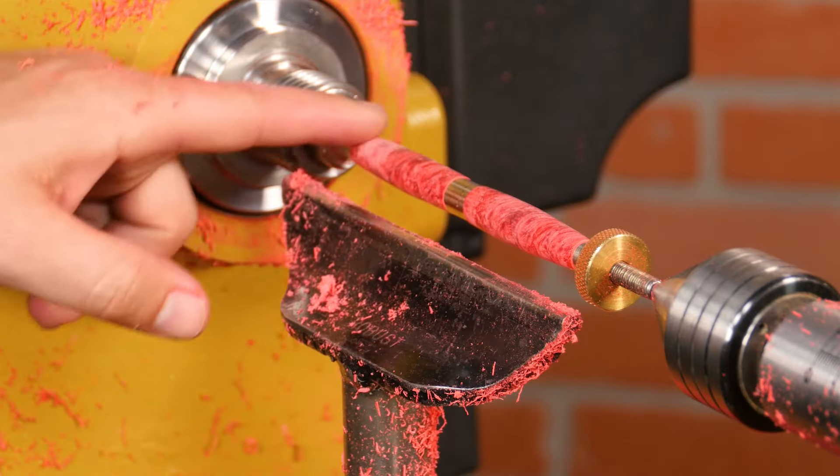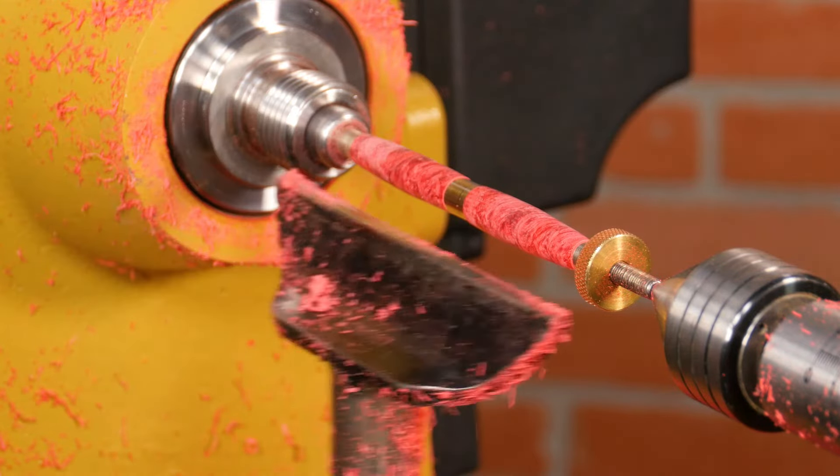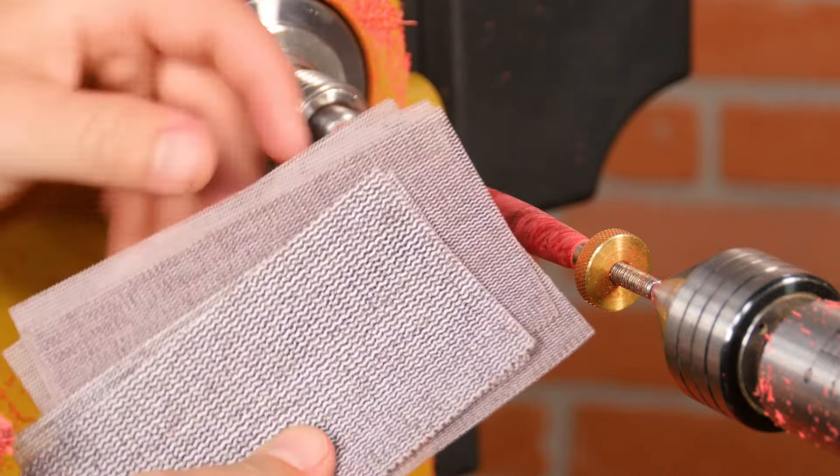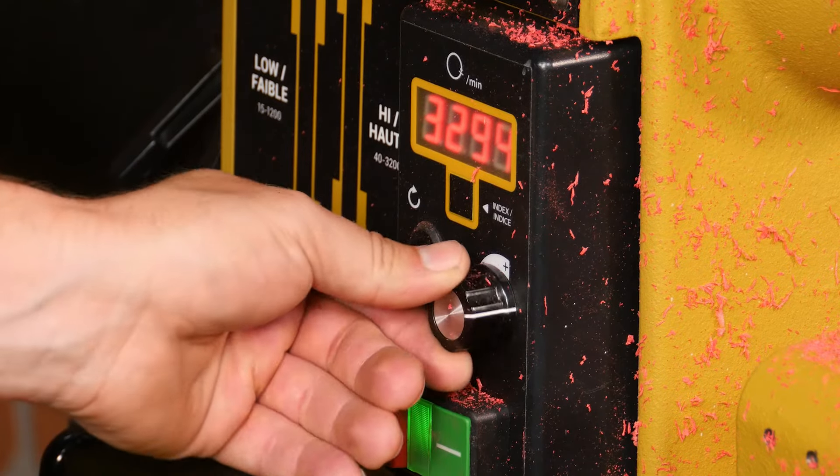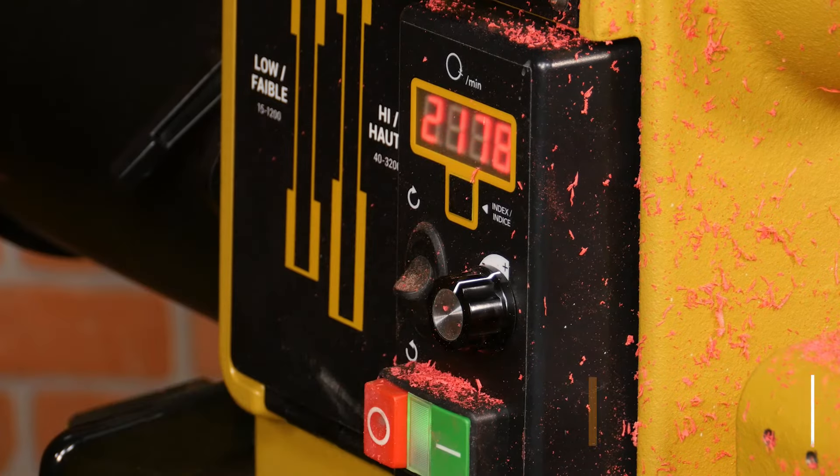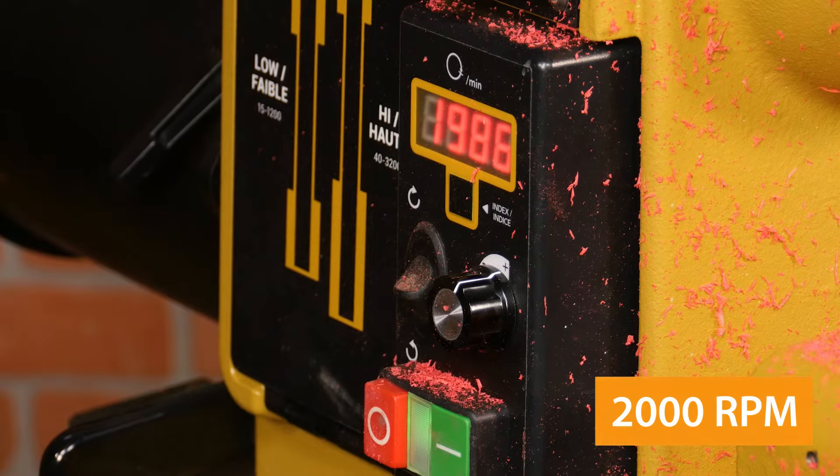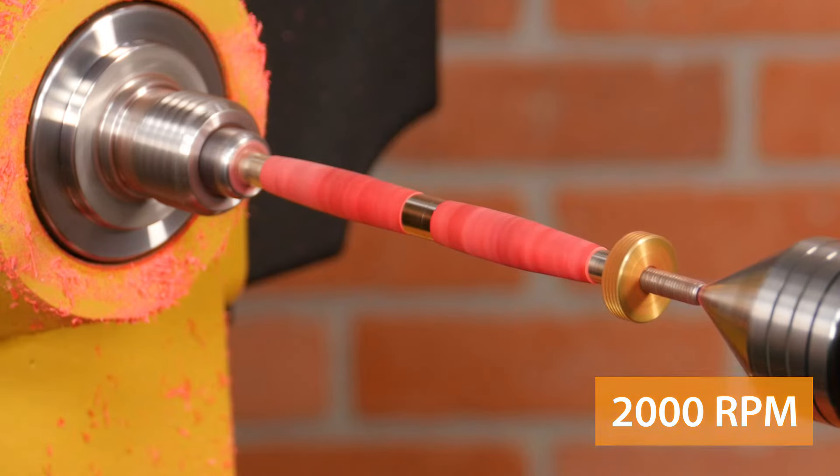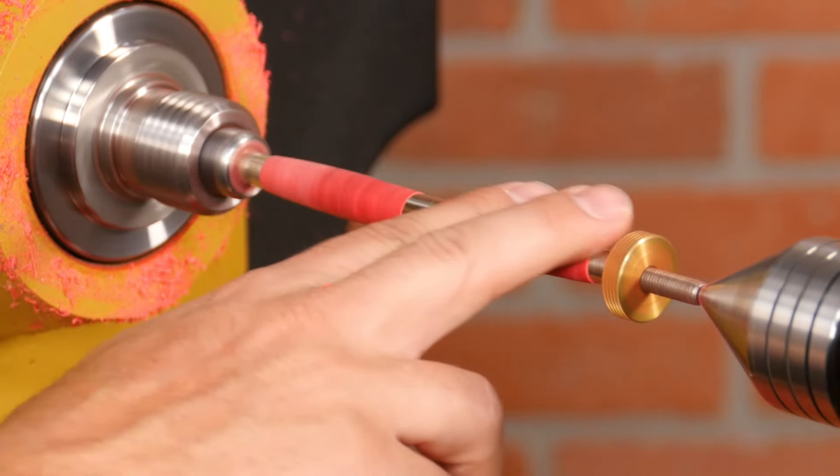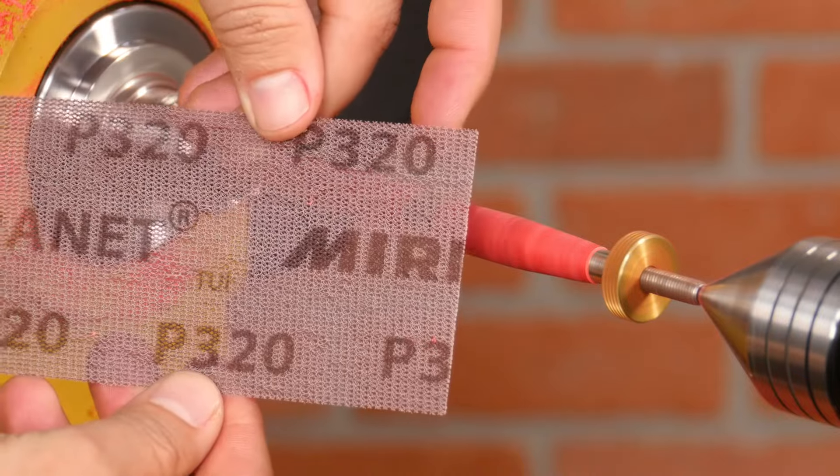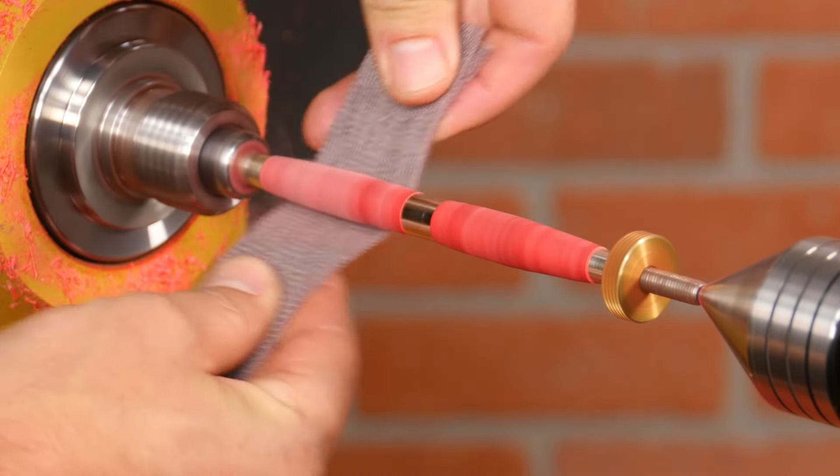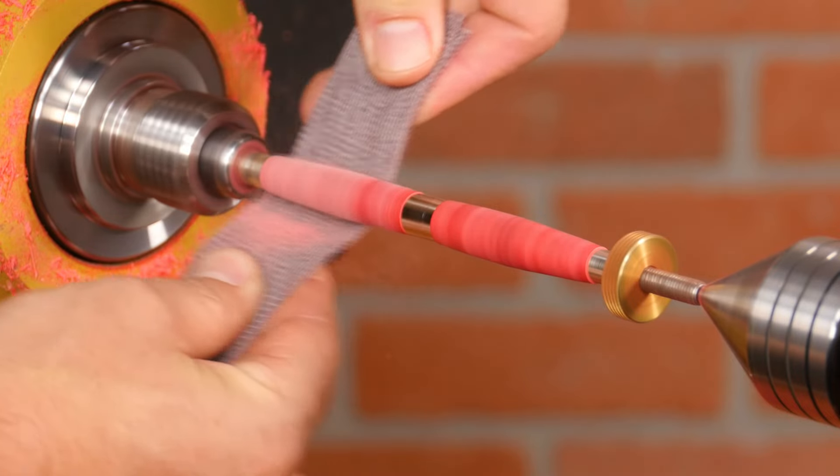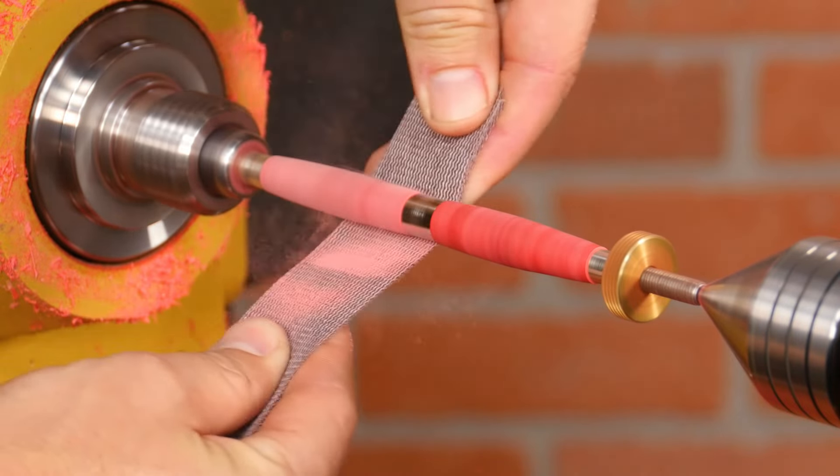Once the blanks are turned to shape, it's time to sand. We've found Abranet sanding screens to be perfect for pen turning. They cut well and don't load like traditional paper. Set the speed to around 2000 RPM. Our final cut with the skew gave us a very smooth surface, so I'll start sanding with 320 grit. Sand with light pressure, moving the paper back and forth constantly across the blanks.